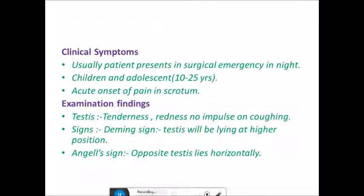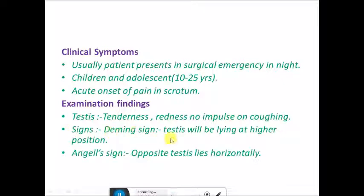Clinically, the patient usually presents as a surgical emergency, often at night, with a history of either sleeping or vigorous exercise. The age group is typically 10 to 25 years — children and adolescents. Pain is of acute onset. Examination reveals a tender testes with redness and no impulse on coughing. Two signs are present: the Demming sign, where the testes lies at a higher position due to twisting, and the Angell sign, where the opposite testes lies horizontally due to a defect in the mesorchium.